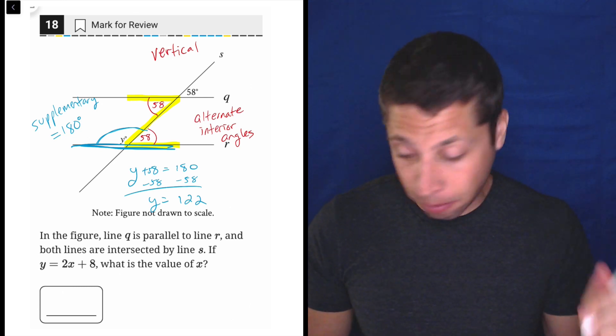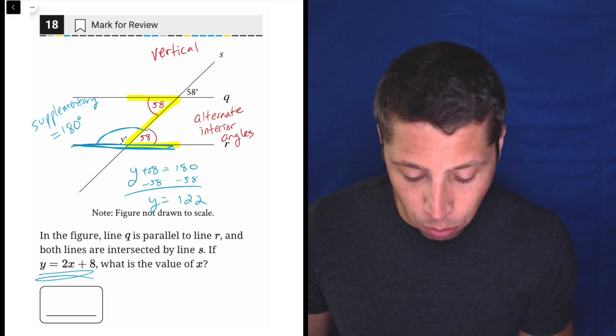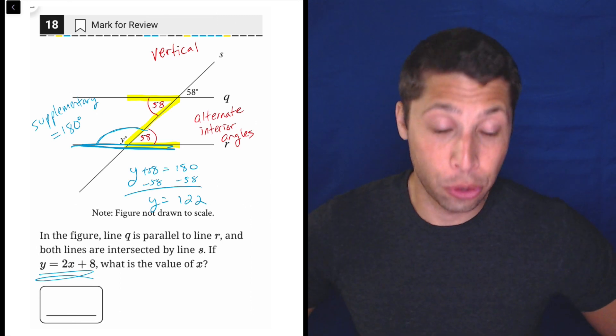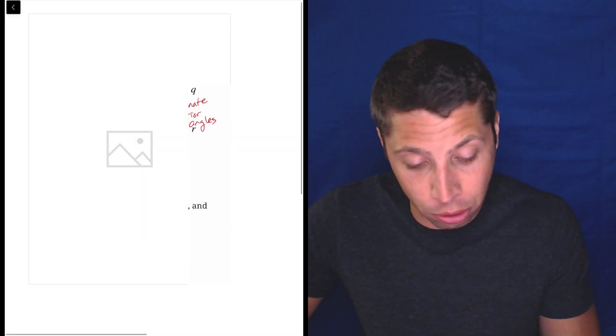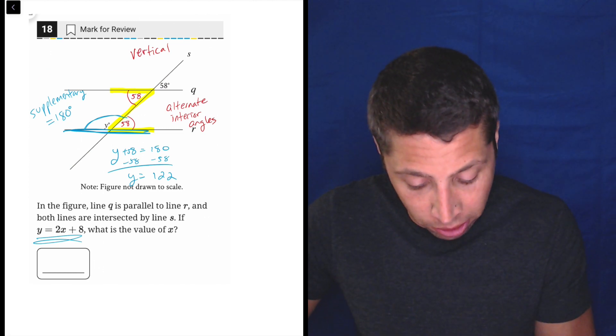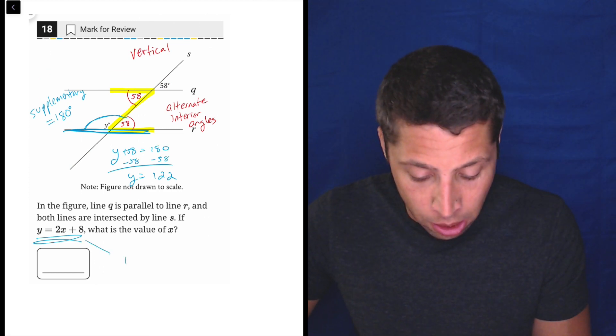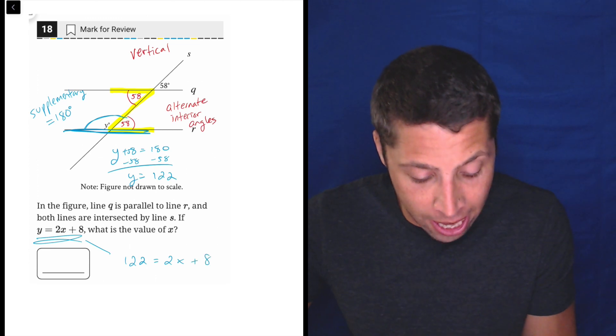Now don't bubble that because that's not the answer. Sometimes that's all we need to do, but in this case we have one extra step. Y is equal to 2x plus 8. So we just have to do a little bit more algebra here, but it's not even geometry related at this point. So I'm just going to substitute my 122, 122 is equal to 2x plus 8.